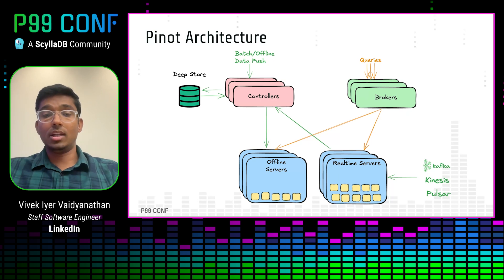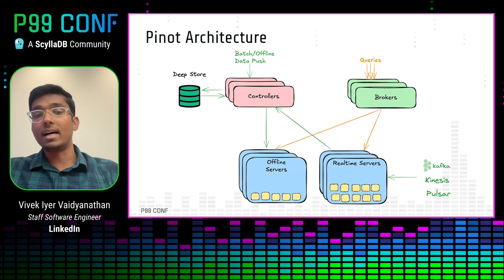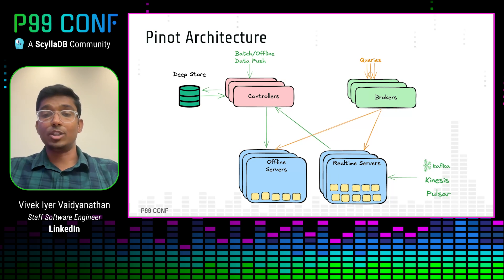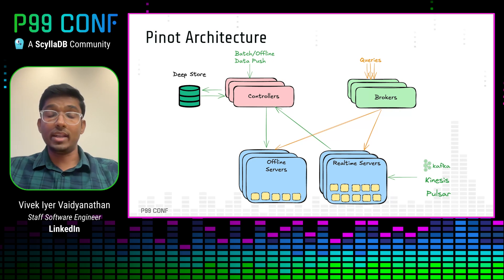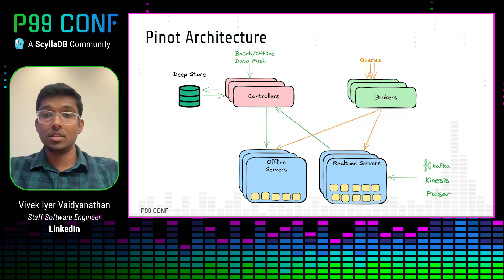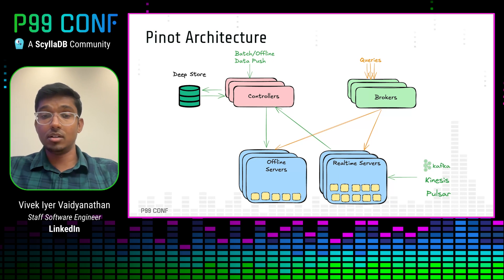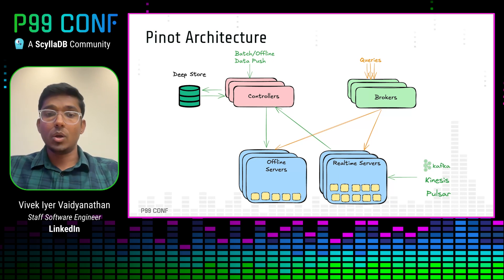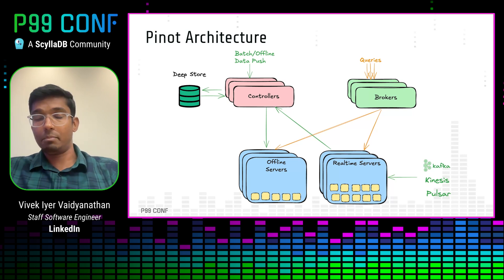Queries in Pinot are processed using a scatter-gather fashion. The query initially enters through the Pinot broker, where it is parsed and compiled. The broker then identifies a set of servers well-suited to process the query and farms it out to them. The servers do the bulk of query processing in a distributed fashion, then return results back to the broker, which performs one final merge step before returning results to the user.